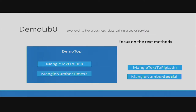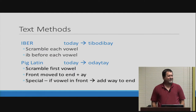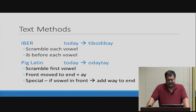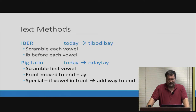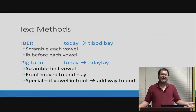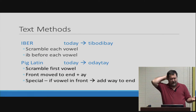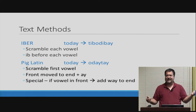Now Ivor: I learned this from some cute girls when I was in college. It's like Pig Latin but different. For each vowel you put an 'ib' before it. So 'today' becomes 'taibodaibe.' You won't find it on the web. I also have MangleTextPigLatin with the same signature — they have a common interface. For Pig Latin you only scramble the first vowel you find: the front consonants move to the end and you add 'ay.' So 'pig' is 'igpay.' If the word starts with a vowel like 'egg,' you add 'way' — so it's 'eggway.' I found that out on Wikipedia.